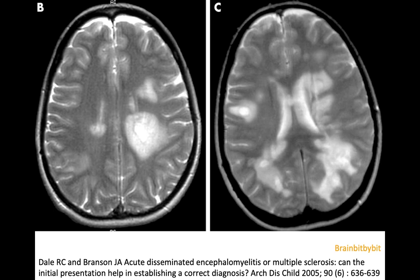In ADEM, there is a monophasic disease with involvement of both white matter and deep gray matter structures. It occurs mainly in pediatric patients with a peak age between 5 and 8 years old, and it is post-infectious or post-vaccination. So there is a peak in ADEM in winter and in spring.